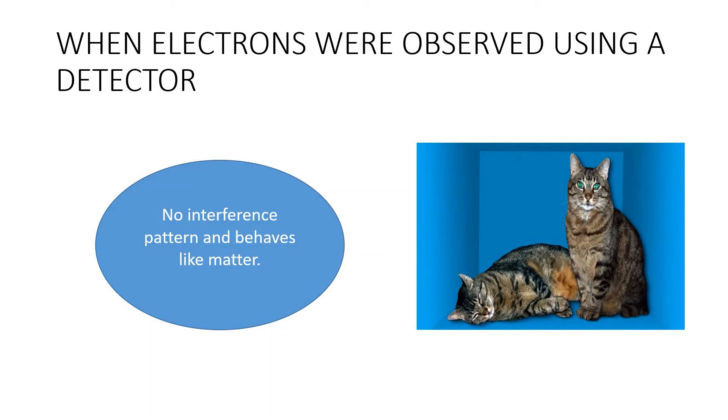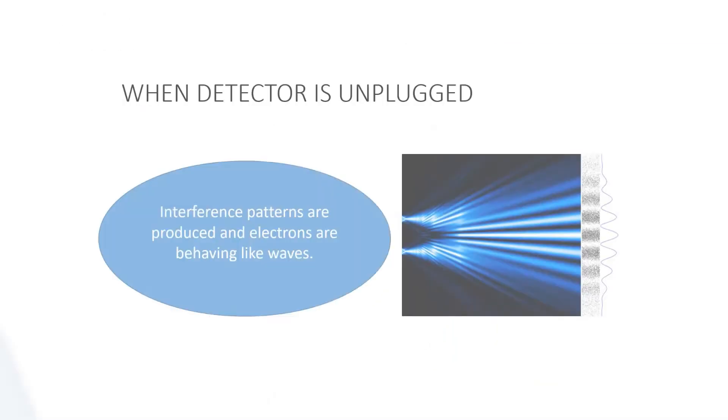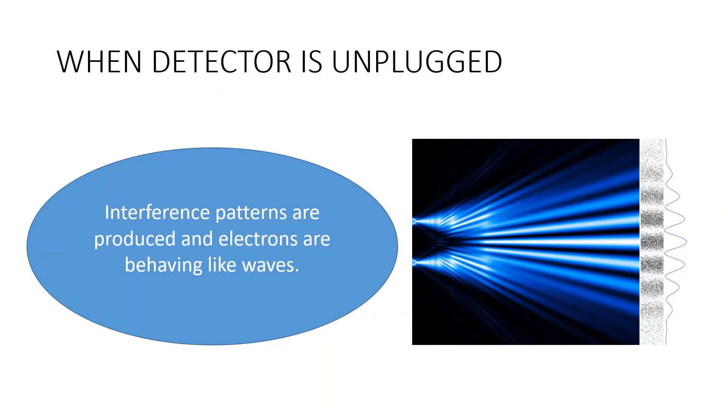Now we will leave the detector there and unplug the detector and run the experiment again. But we can see alternate dark and bright bands in the screen that again interference patterns are produced.